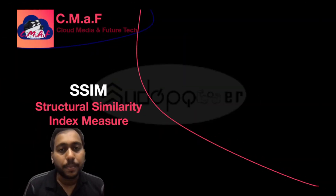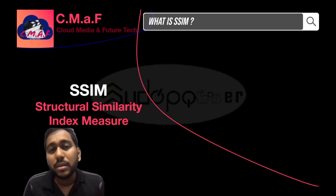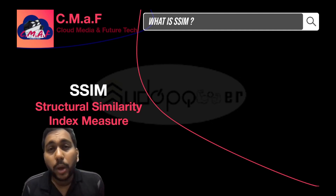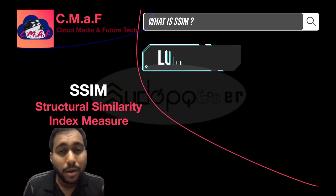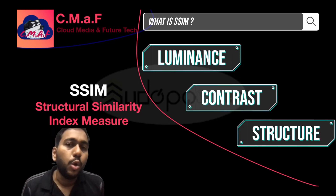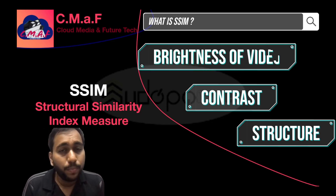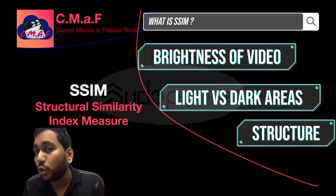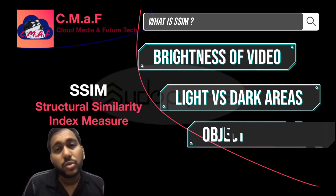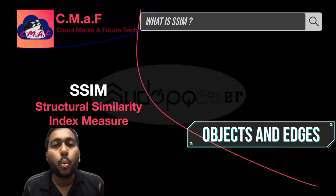The second metric is SSIM, which stands for Structural Similarity Index Measure. This is a way to measure similarity between two videos. SSIM takes into account three different factors: luminance, contrast, and structure. Luminance refers to the overall brightness of the video. Contrast refers to the difference between the light and dark areas of the video. And structure refers to the arrangement of objects and edges within the video.